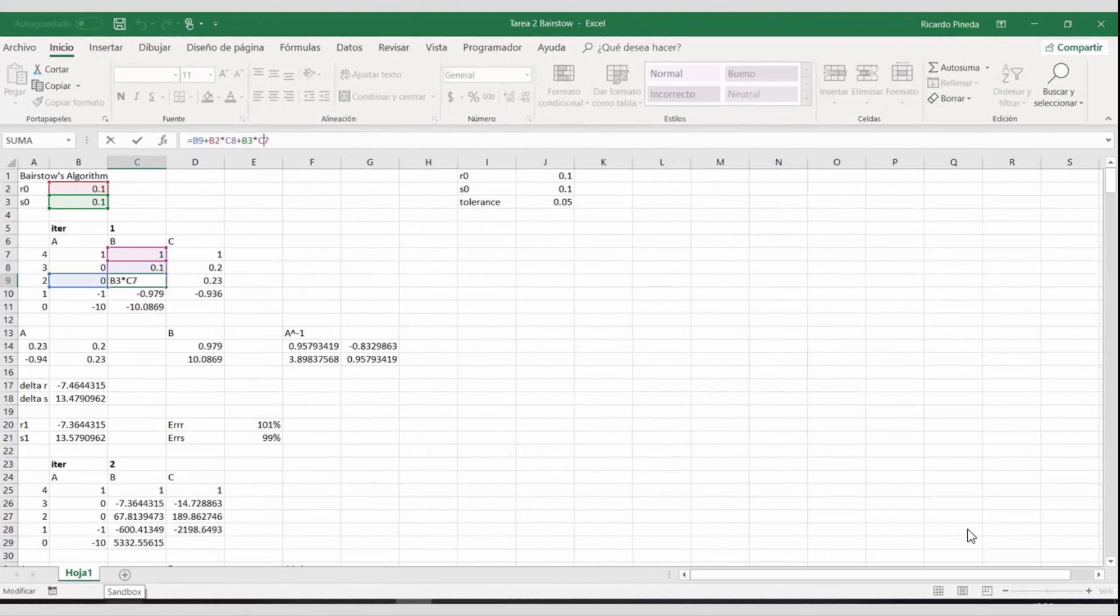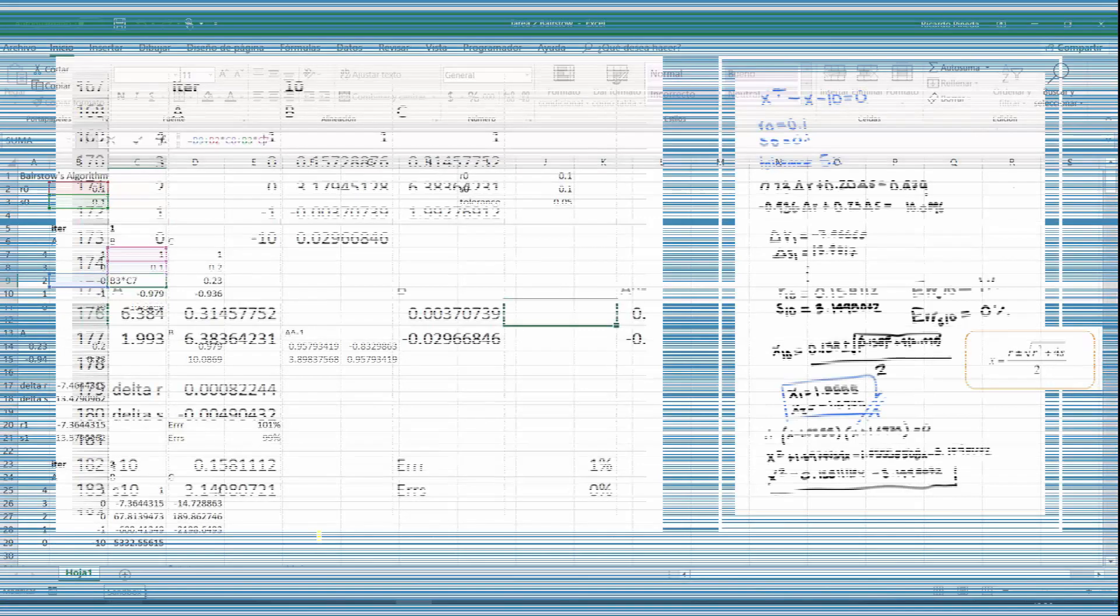Now, I did this same example in Excel, using the same problem and the same initial conditions. And, as you can see, the A value will not change, unless, of course, you're working with another equation. And, I'm also leaving the Excel formula, so that you can see what I multiplied and what I added. Now, the A matrix, I had to multiply it by the inverse, so that I could get it to calculate the delta r and delta s. I took around 10 iterations to solve this problem.